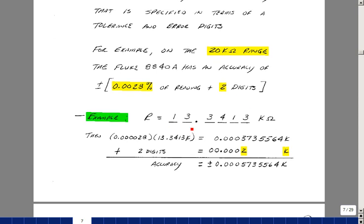What does that mean? Suppose that I read 13.3413k ohms. We take the reading and multiply it by the percent which is going to be an additional two zeros here plus the two that were up here in 28. And when you multiply that times the reading you get something and of course the reading was in k ohms.